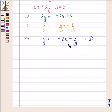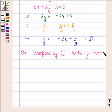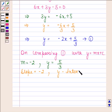On comparing equation 1 with y equals mx plus c, we find that m equals minus 2 and c, that is y-intercept, equals 5 by 3. So slope of the given line is minus 2 and y-intercept is 5 by 3.